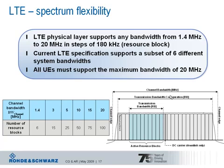The figure illustrates that the transmission bandwidth actually used in the downlink by the base station is formed by the assigned bandwidths in terms of active resource blocks. The available channel bandwidth is slightly larger than the actual transmission bandwidth configuration of the cell, to leave some guard band on both sides of the spectrum.